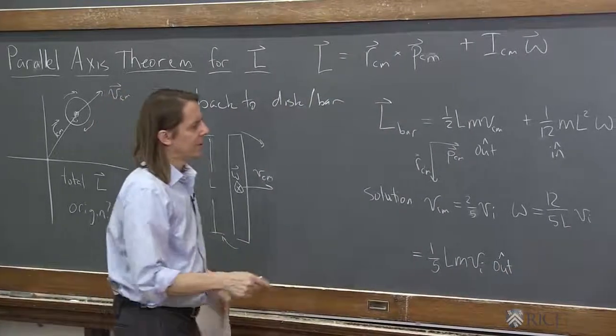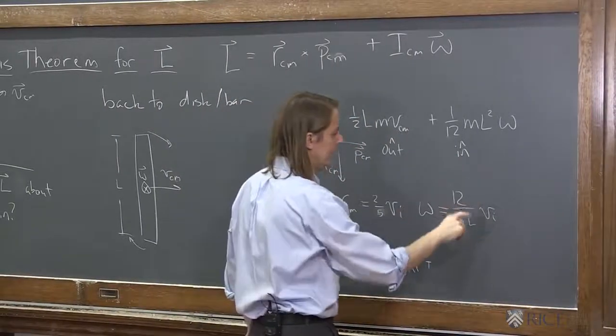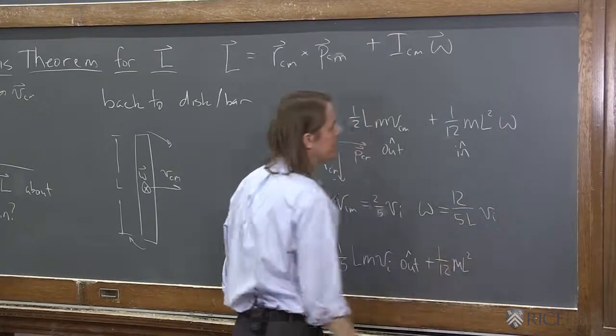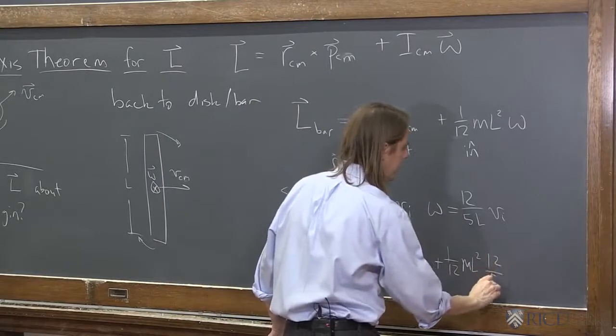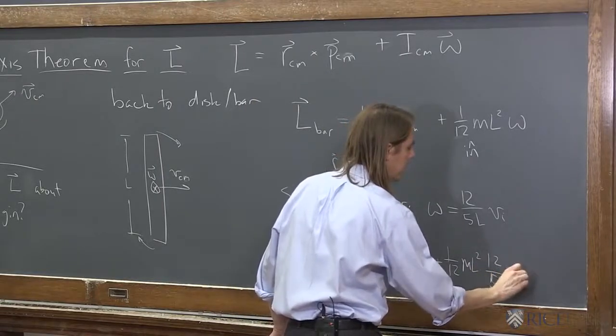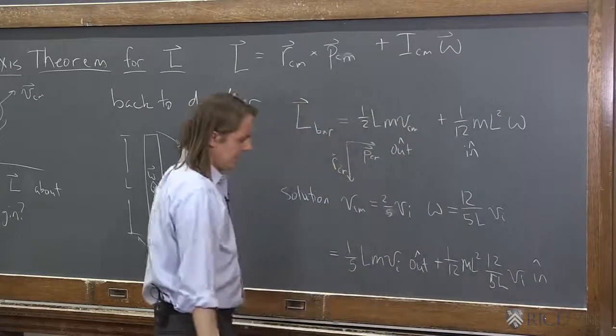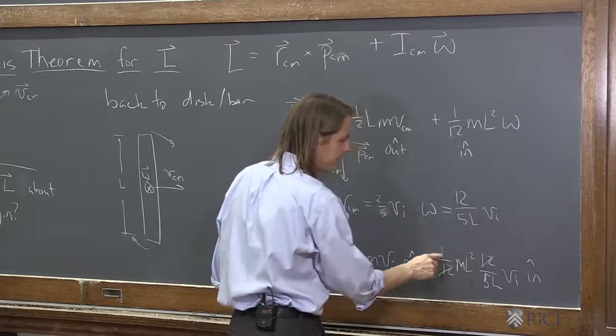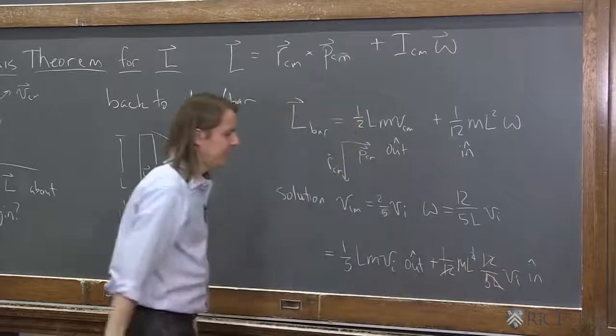And then this one is plus, let's see, one-twelfth ML squared times omega, which is twelve-fifths LVI, and that's in. So then we start canceling and stuff, and we see that goes with that, and we have one-fifth ML, just like before, VI. It's the exact same positive number, but one is out and one is in,